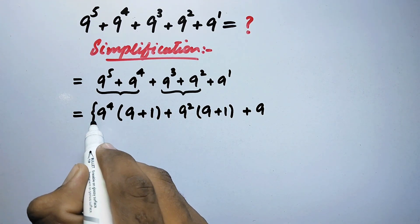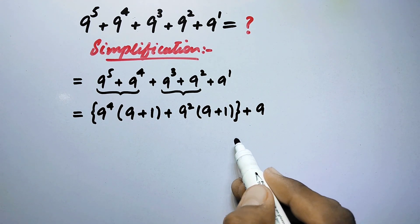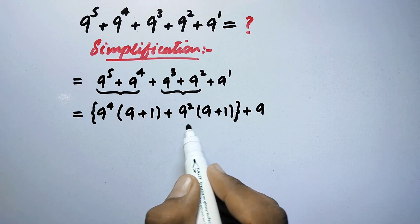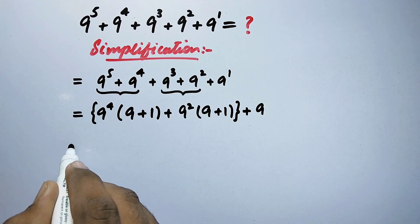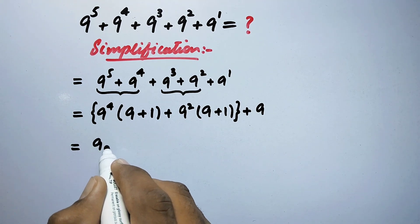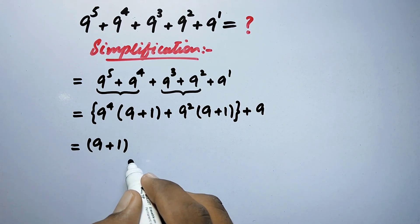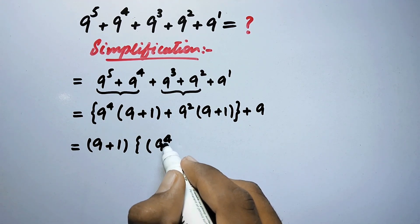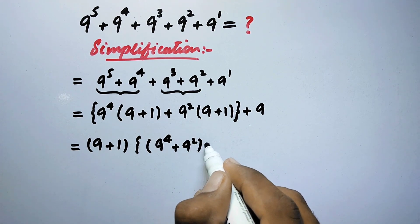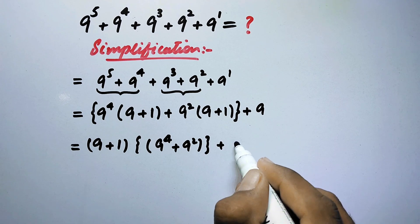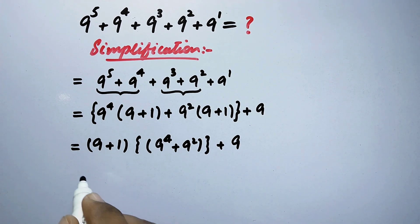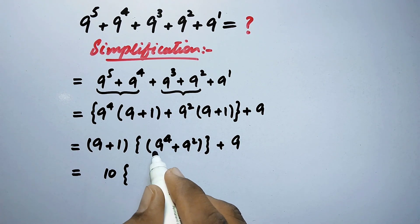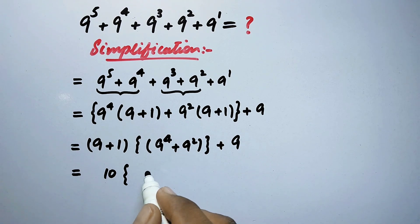So now we can see that the term 9 plus 1 is common in both groups. So we will take it out as a common factor again. Therefore we get 9 to the power 4 times 9 plus 1, and what is left will be 9 squared plus 9. Now here 9 plus 1 equals 10, times 9 squared, which is the same as 81, into 10 times.